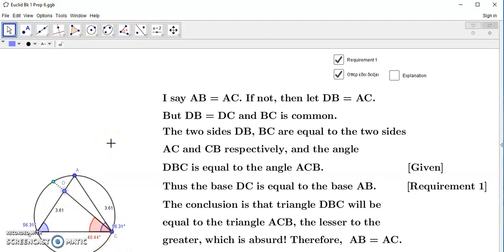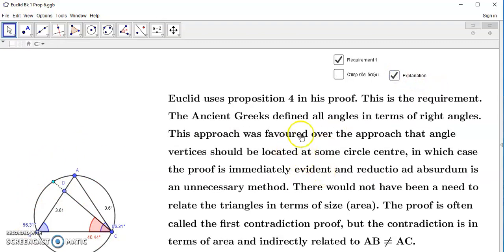So therefore, if it's false, it means that AC is equal to AB. So this is a simple proof, and now Euclid uses Proposition 4 in his proof, and this is this requirement 1 which I'm talking about. In other words, the requirement that triangles which have two equal sides have the same base.